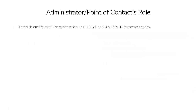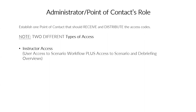To recap those steps: have one point of contact who will receive and distribute the access codes. Note that there are two types of access — instructors and students. Instructors have access to the scenario workflow and also to instructor materials including scenario overviews and debriefing overviews. Students are designated for user access only. Instructor access includes additional instructor tools and resources to help launch the program.